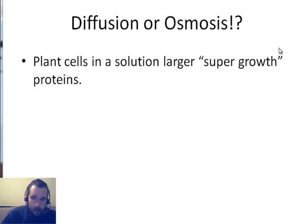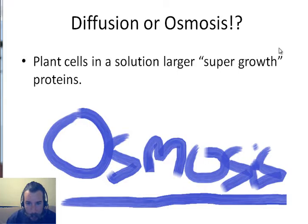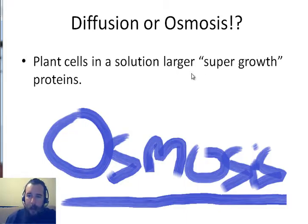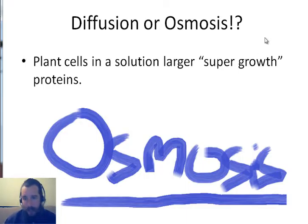We went to the store, we bought super growth protein, and we put it in a solution for the cells to be in — diffusion or osmosis? Oh, it's osmosis. Large super growth protein — that seems like it would be good for the plant, but it's a large molecule. It can't go through the cell membrane, so it must be osmosis.